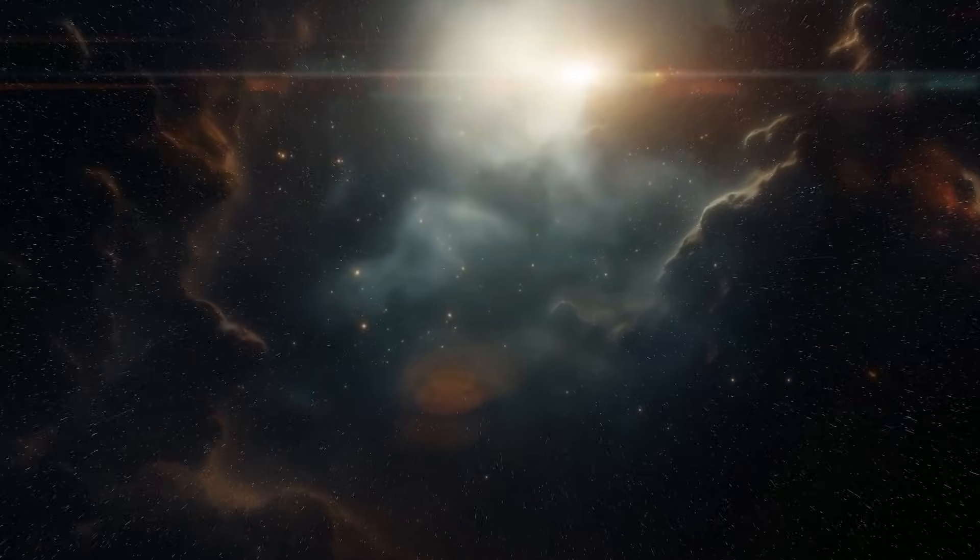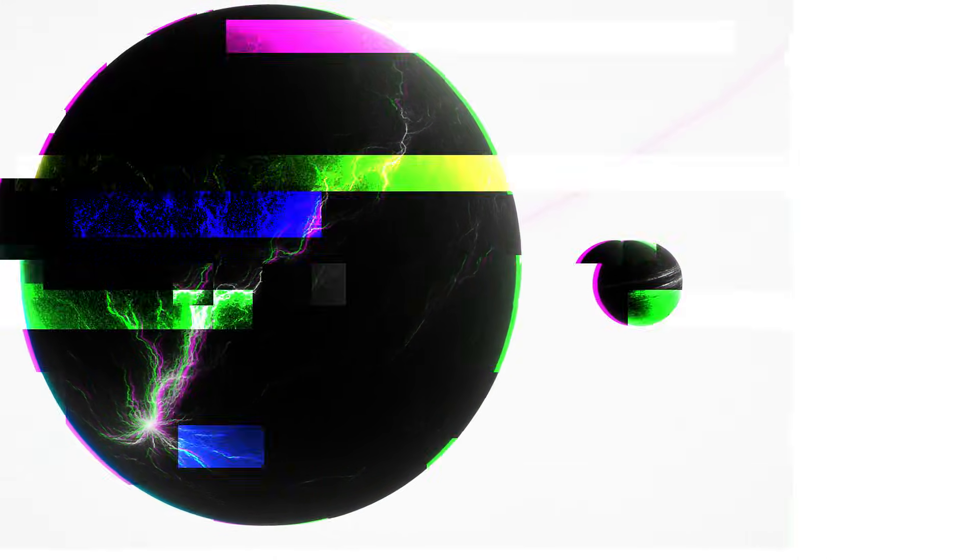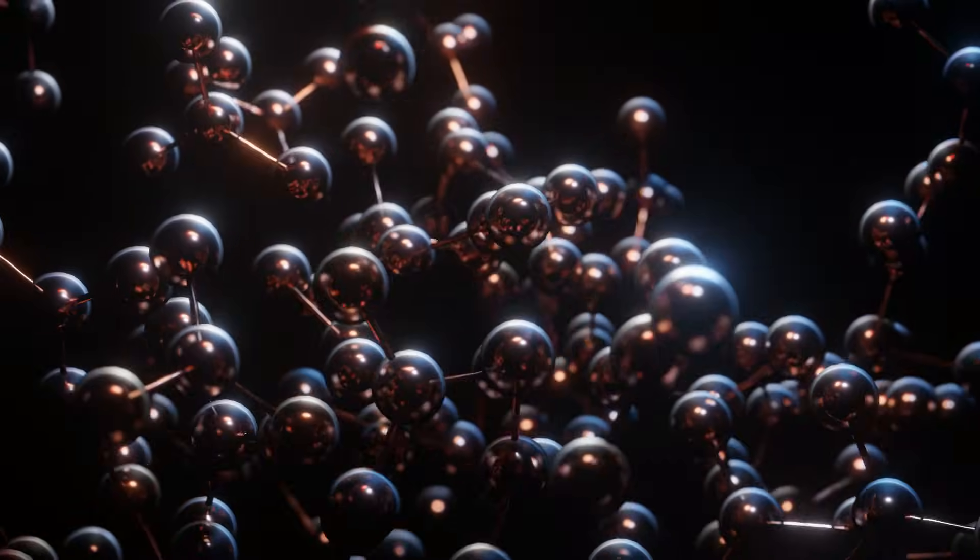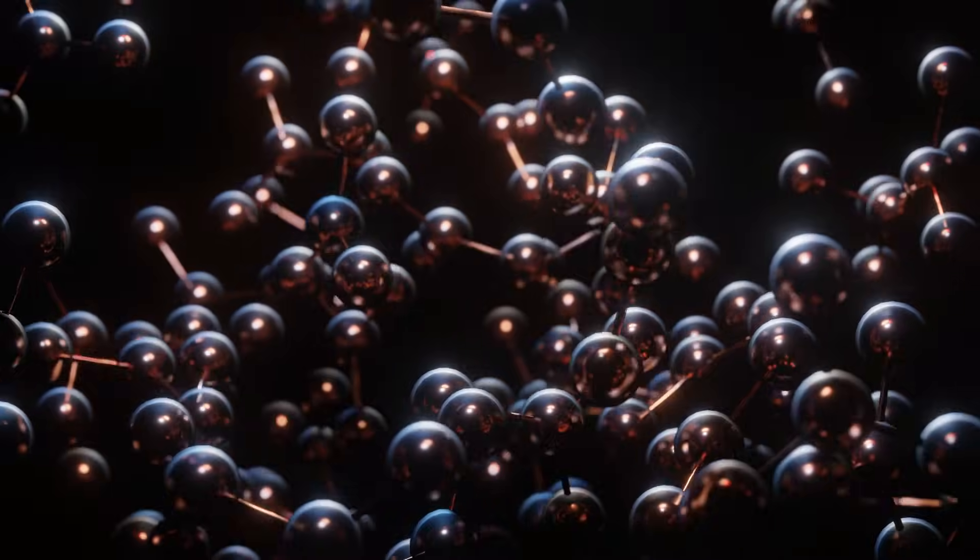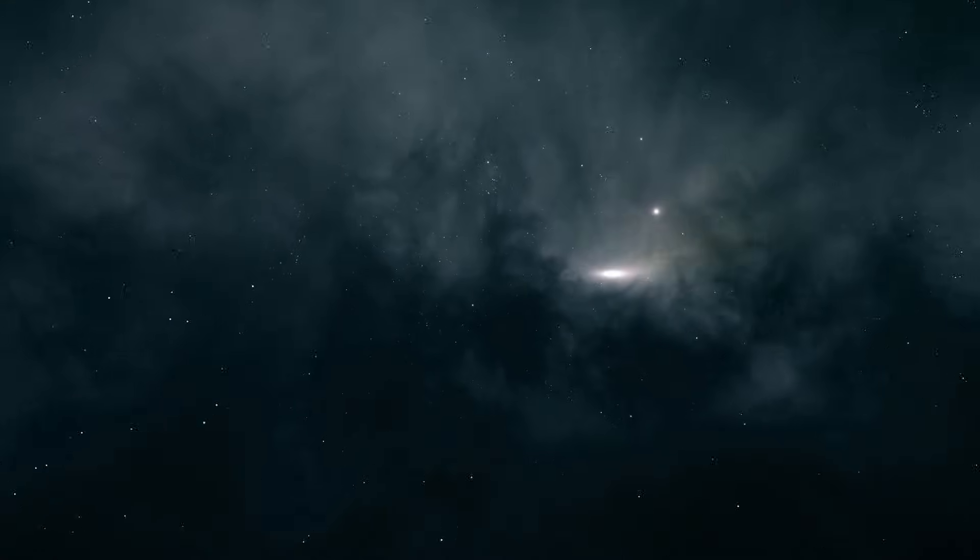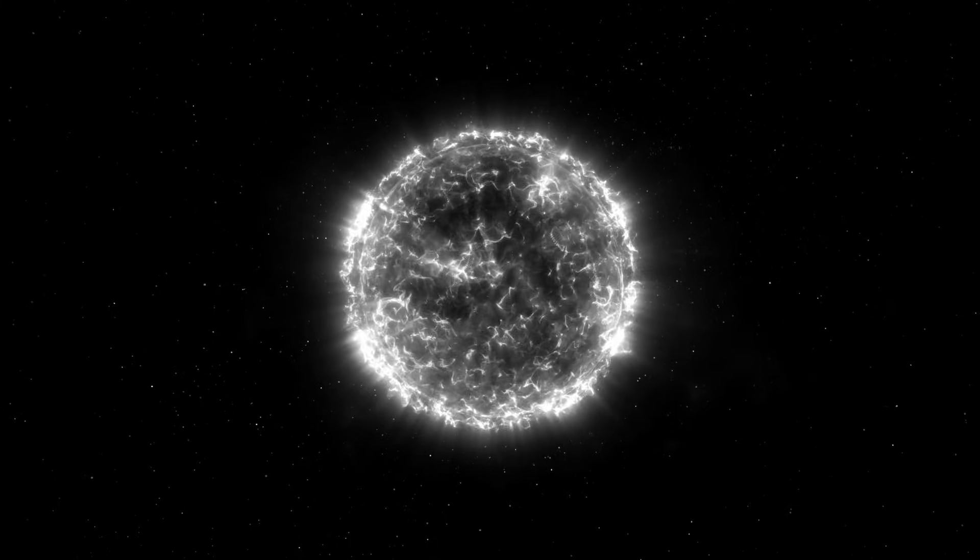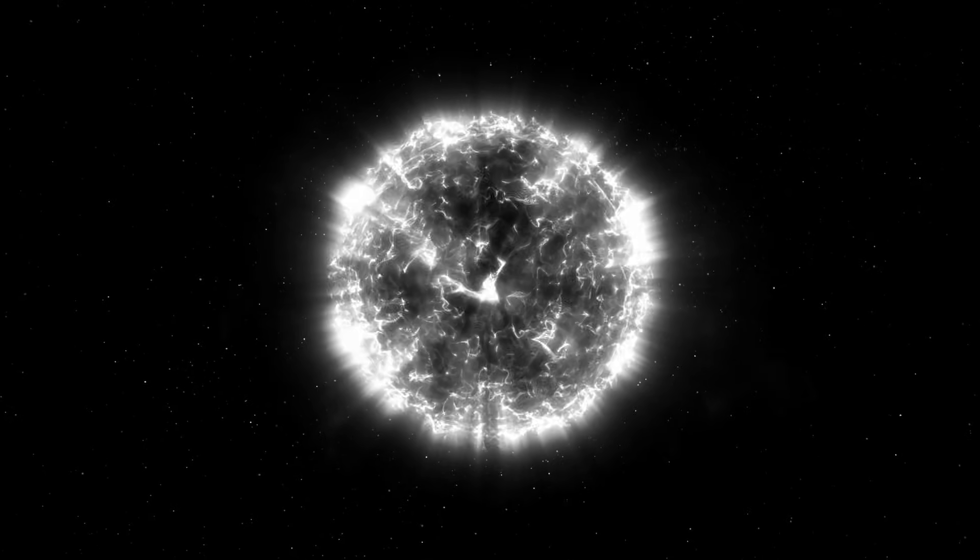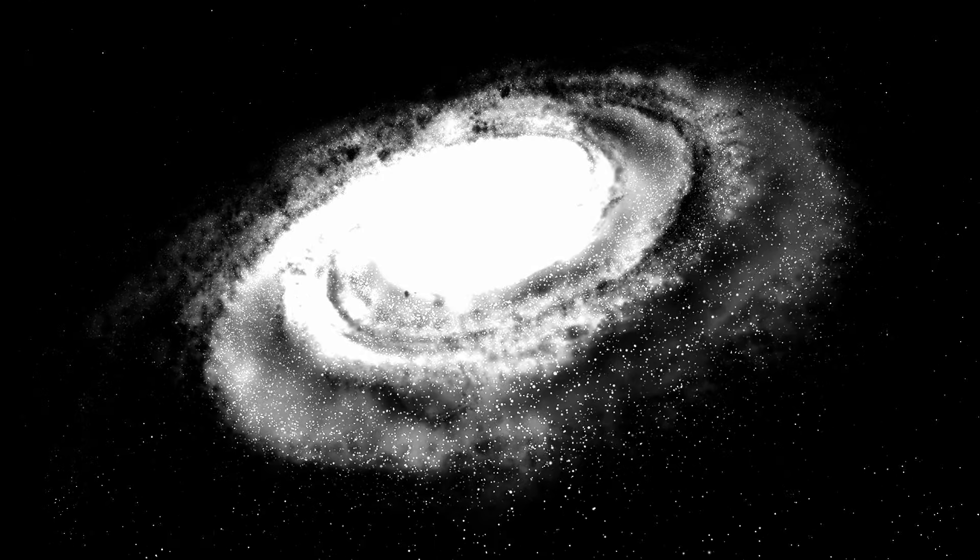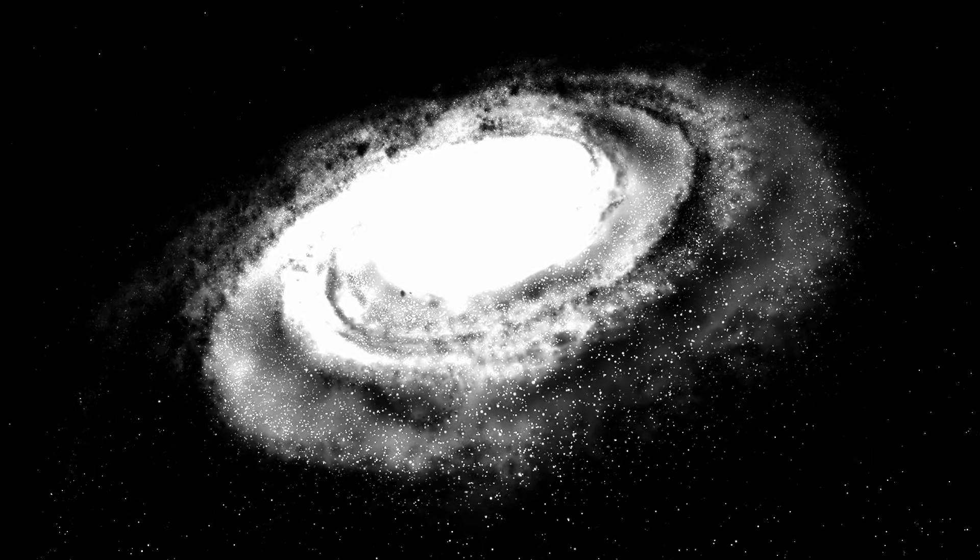It might form atoms, not made of protons and electrons but of dark equivalents we've never discovered. Those atoms could join into dark molecules. Dark molecules could form clouds. Clouds could collapse into dark stars. Stars burning in a kind of light we will never see. Those stars could gather into dark galaxies, orbiting in the same space as the galaxies we know.